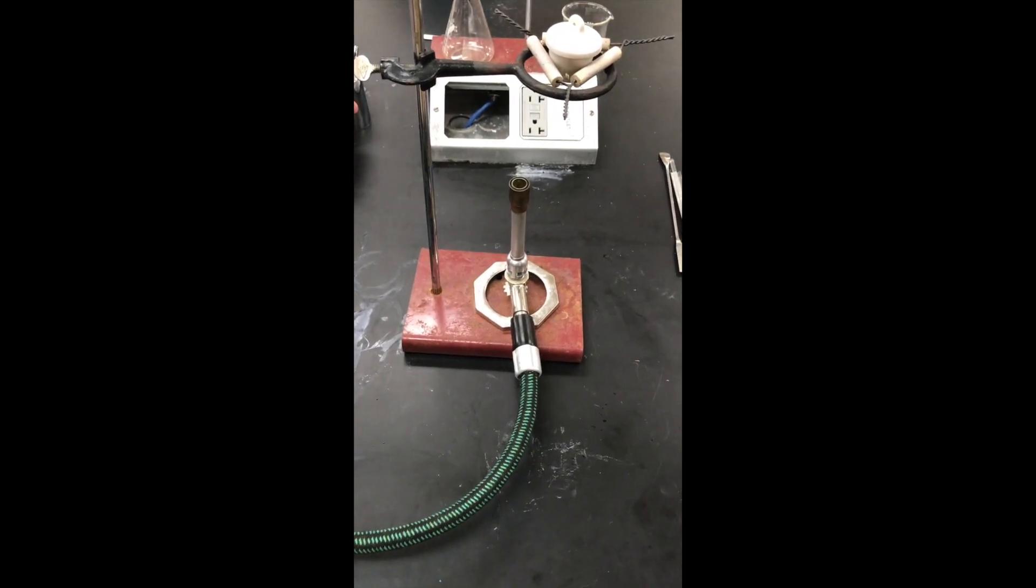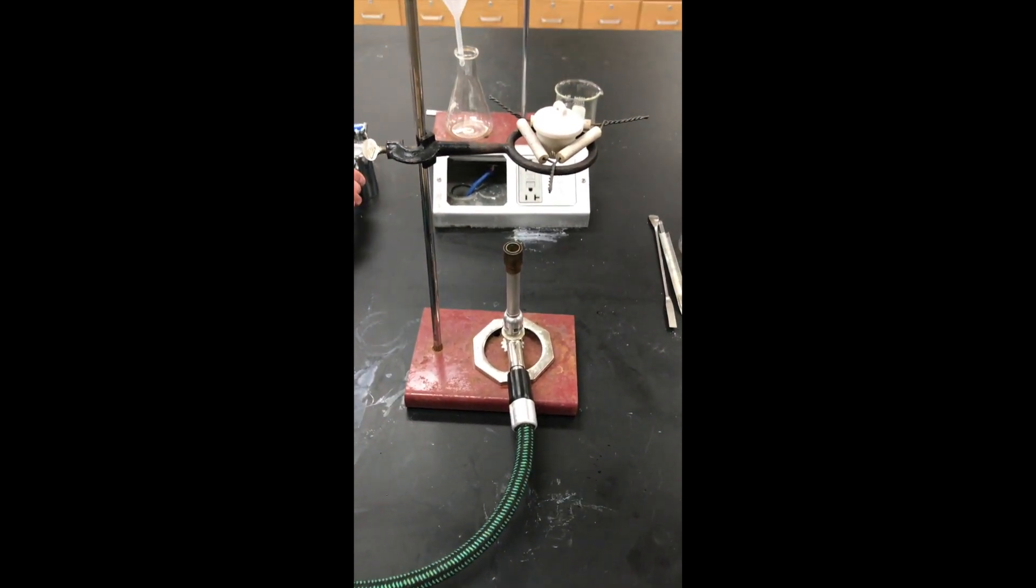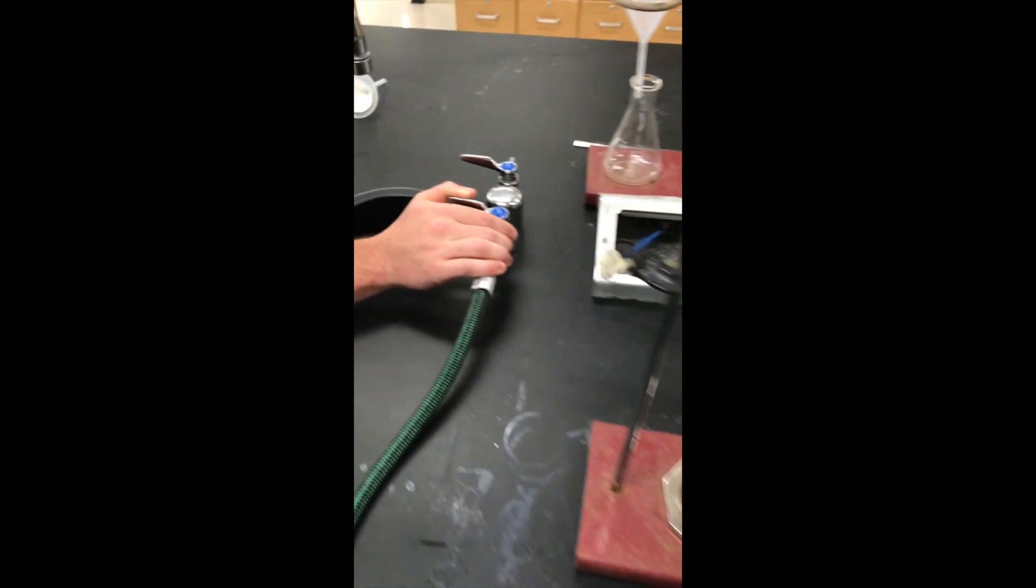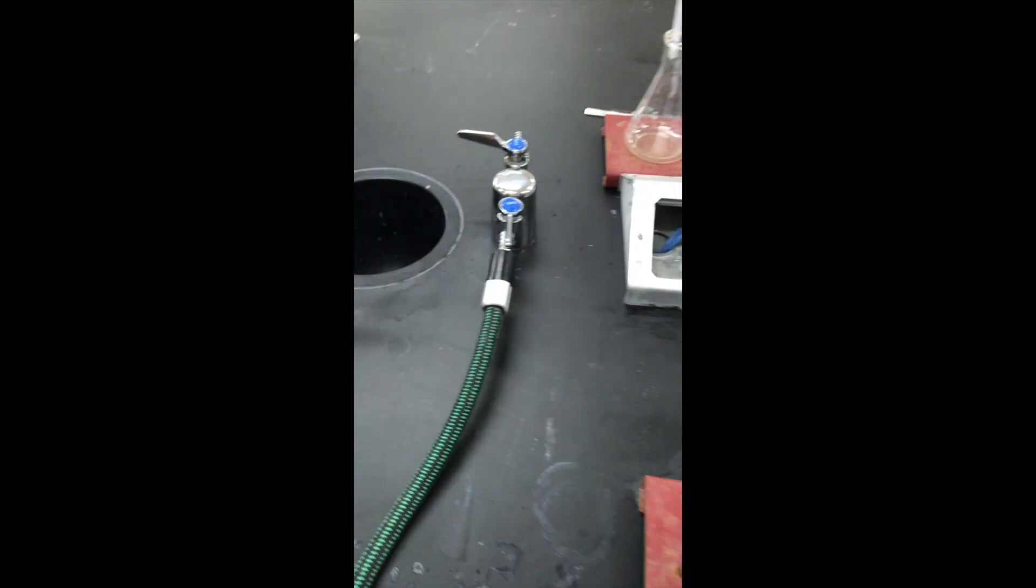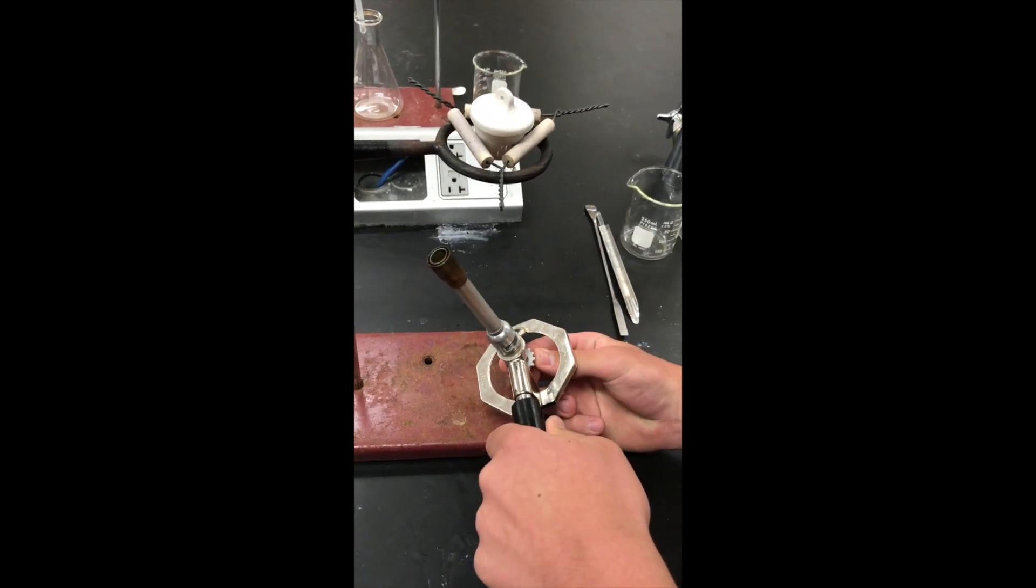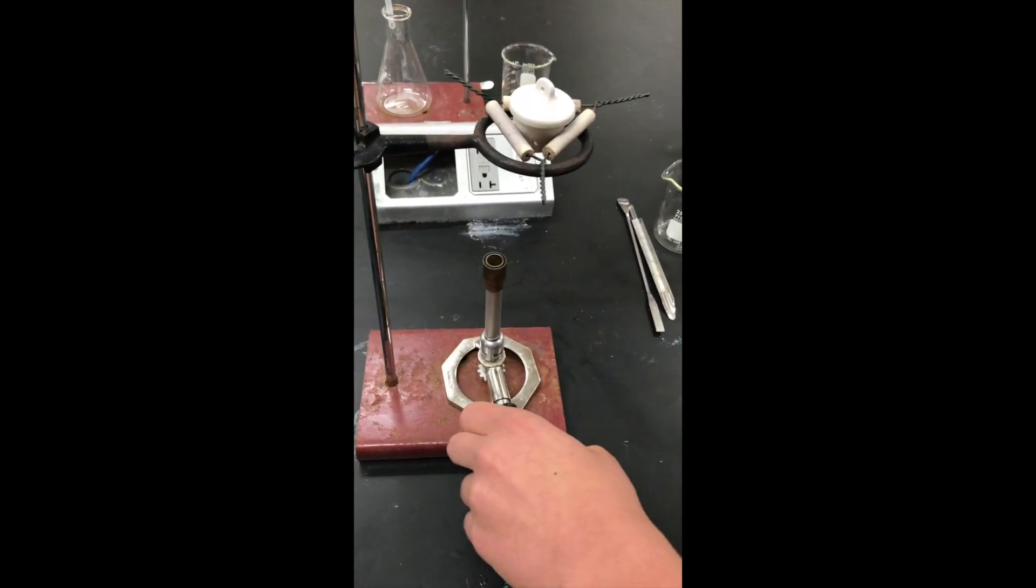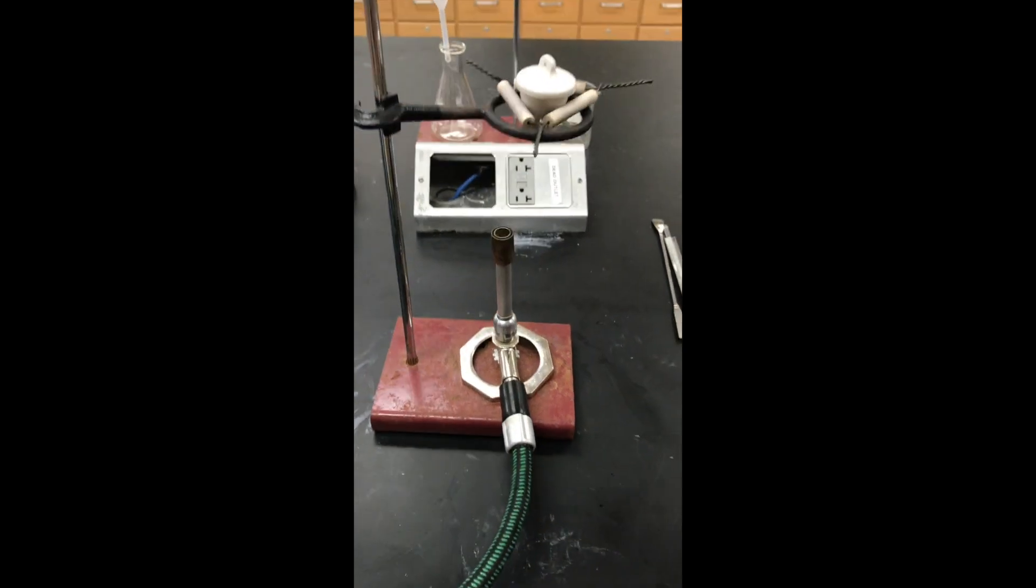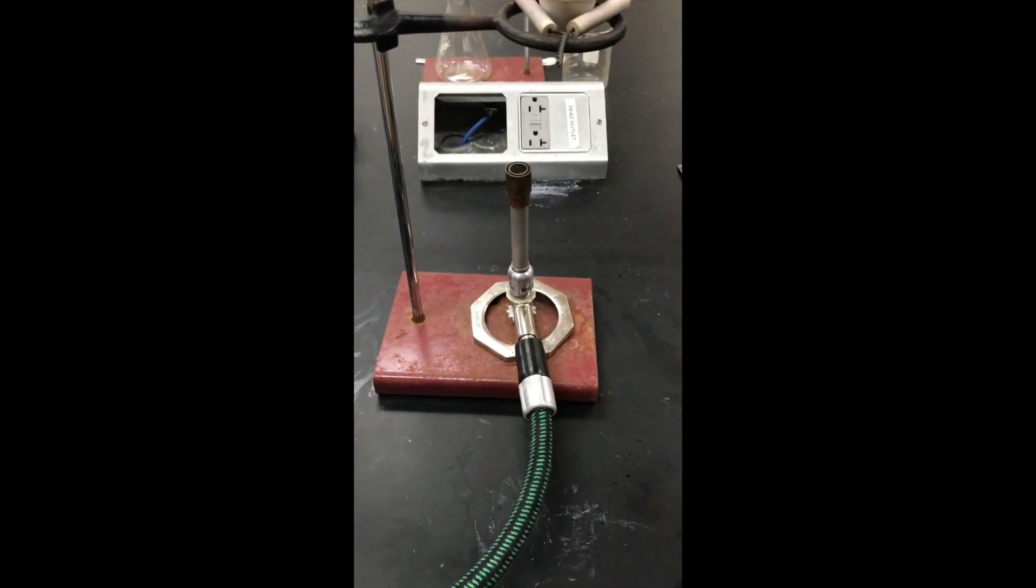Now we will show you how to put all four pieces together and use them properly. First, you will turn on the gas. Gas activated. Now you will turn on the Bunsen burner to allow the gas to come through the flame.